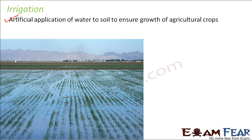Looking at this picture, you can see how fields are irrigated — the plants have been completely irrigated with a lot of water applied to them. Different plants have different water requirements: some need a lot of water, some need a little less. But application of water is important because there is no plant which can grow and survive without water.